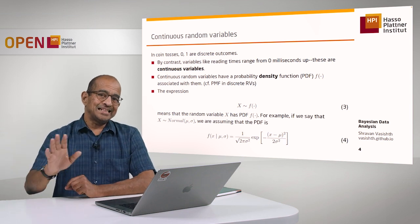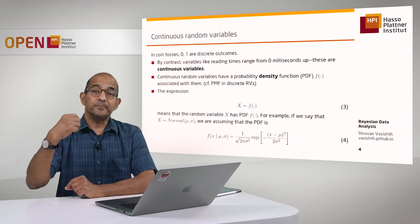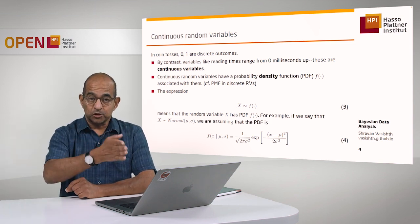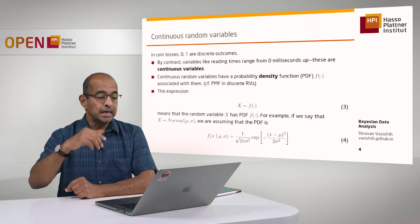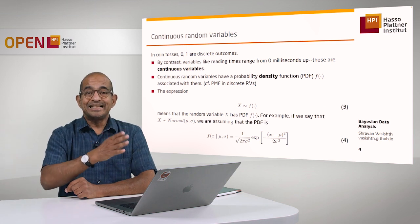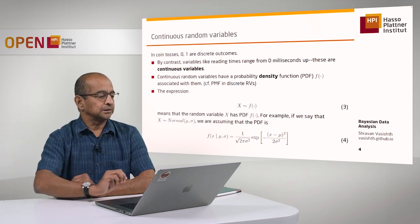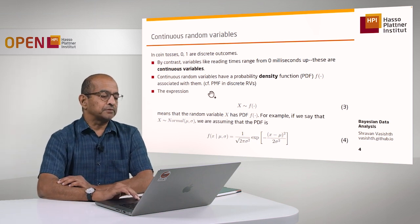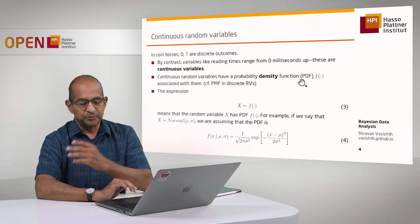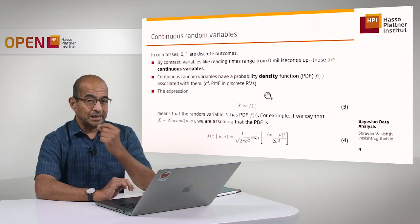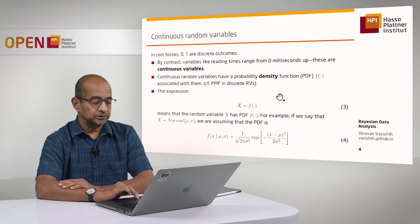What's different between discrete and continuous random variables? One very big difference is that instead of having a probability mass function — which associates with each discrete outcome a probability, as we saw in the binomial and Bernoulli — in the continuous case we get a probability density function, not a probability mass function. I will sometimes abbreviate this as PDF. Don't confuse it with PDF documents; I'm referring to the probability density function of a continuous random variable.